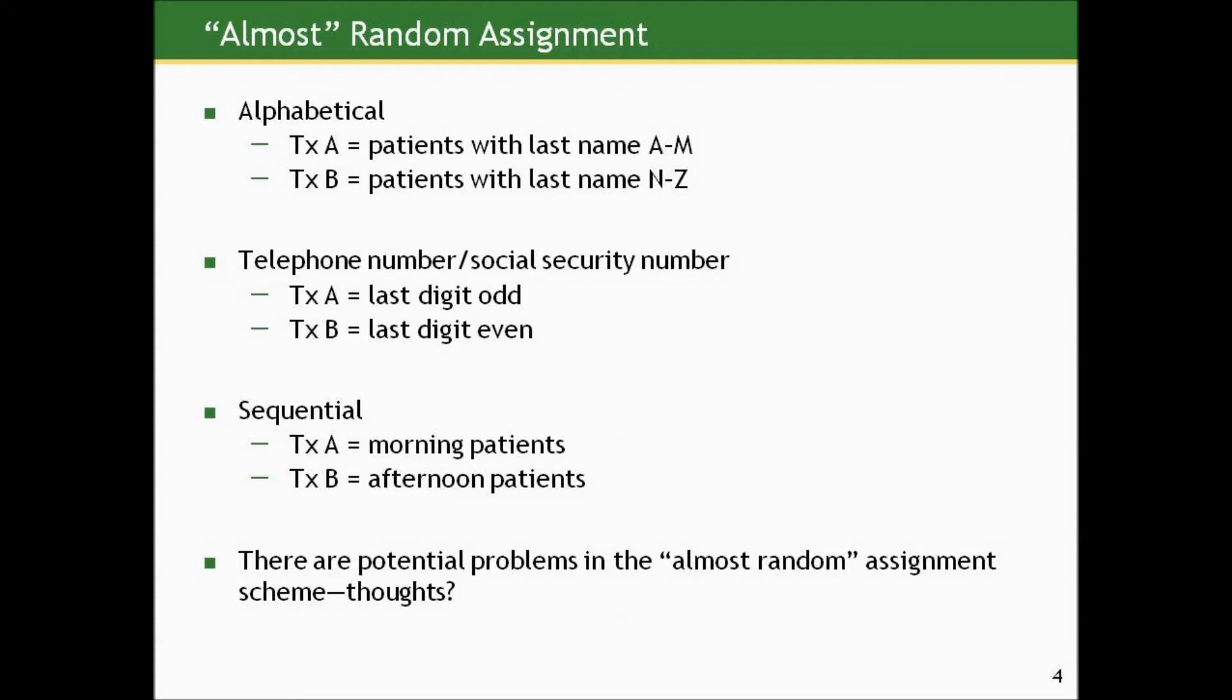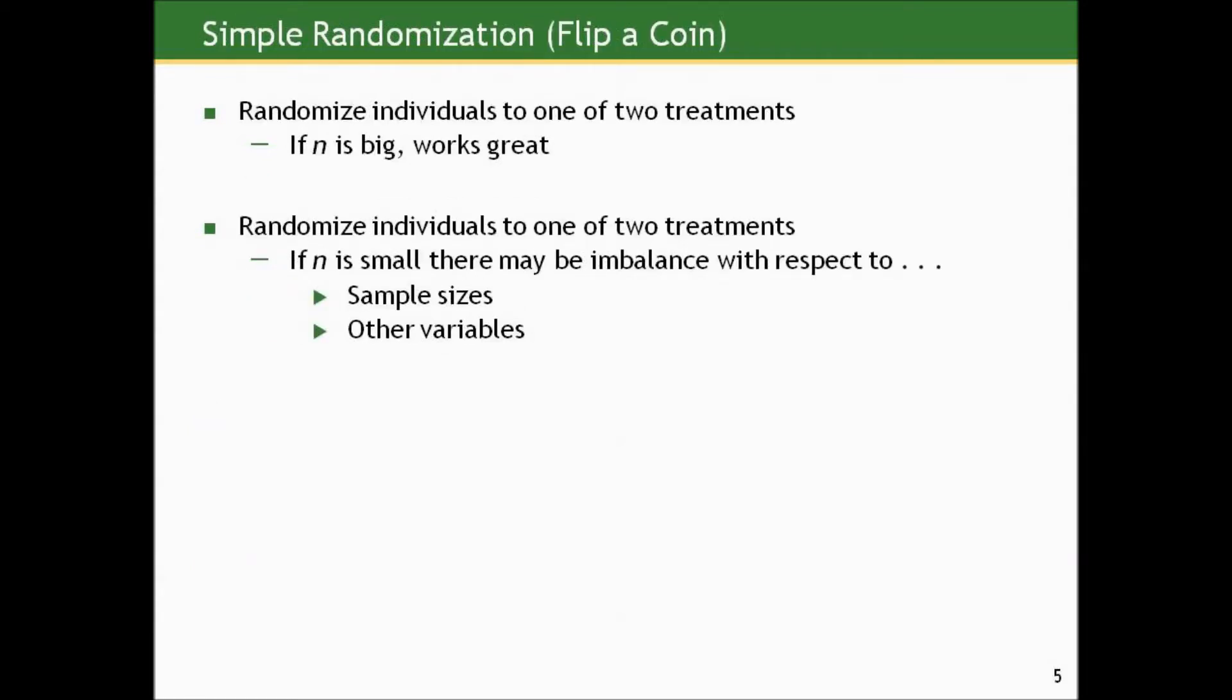We could take a sequential approach and patients who came in, if we were doing this at a clinic, for example, patients who came in the morning, we might put them in treatment A. Patients who came in the afternoon, we put in treatment B. There are some potential problems in these almost random assignment schemes. Any thoughts on that? We can talk about it more in the bulletin board or live talk. The tricky thing is even though they may be appropriate in certain situations, if somebody claims they're not random, it's hard to prove them wrong. So think about that.